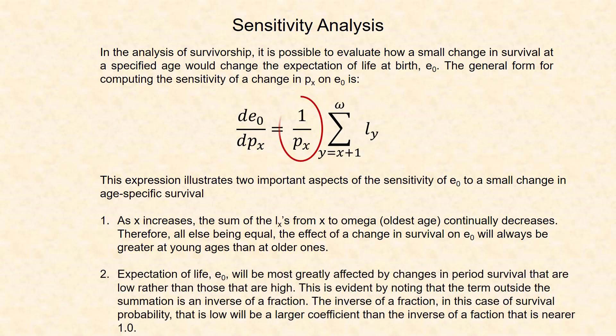Second, expectation of life E0 will be most greatly affected by changes in period survival that are low, rather than those that are high. This is evident by noting that the term outside the summation is an inverse of a fraction. Thus, the inverse of a fraction, in this case a survival probability that is low, will create a larger coefficient than will be the inverse of a fraction that is near 1.0.